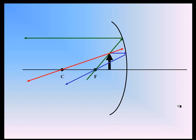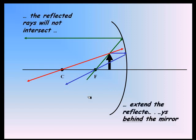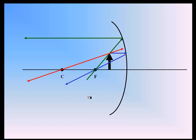Notice that these three lines don't intersect on the left side of the mirror. But if you extend those three lines beyond the mirror, or behind the mirror, those three lines intersect at a point behind the mirror.